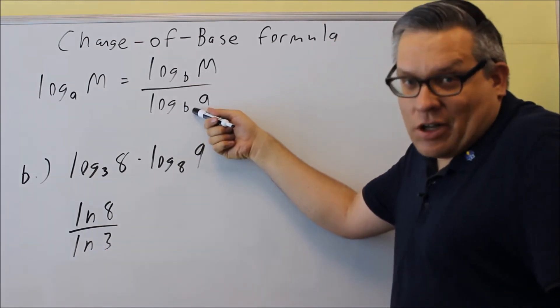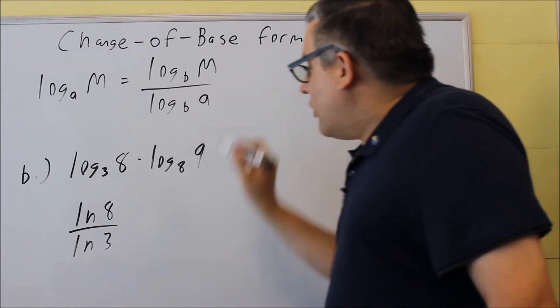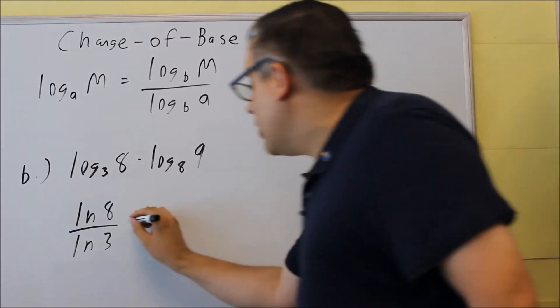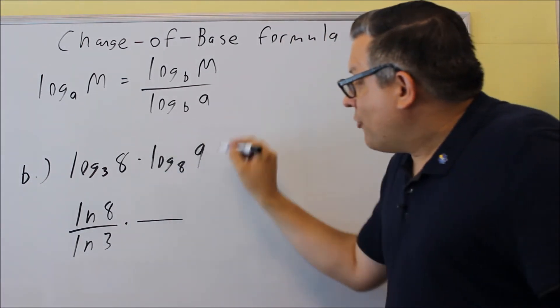I'm doing a log base E technically here, which is why I'm just putting that all as LN. So I have the base of the other one, the original one, I put that on the bottom. So I have that complete. Next, I'm going to do another change of base formula for this one here.